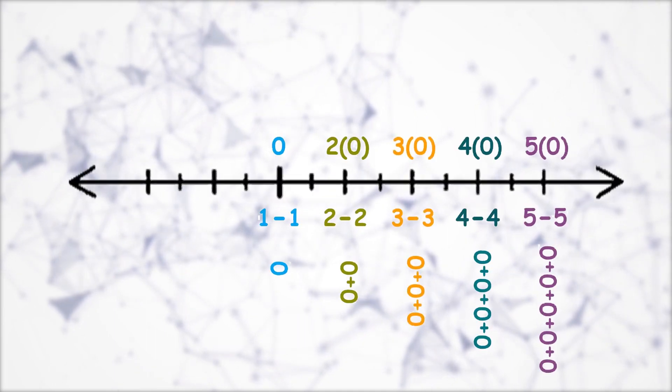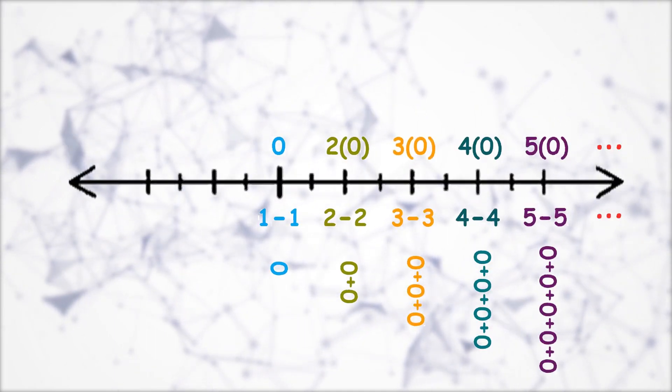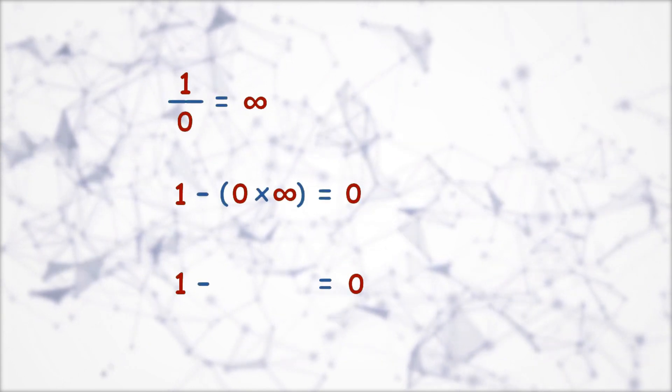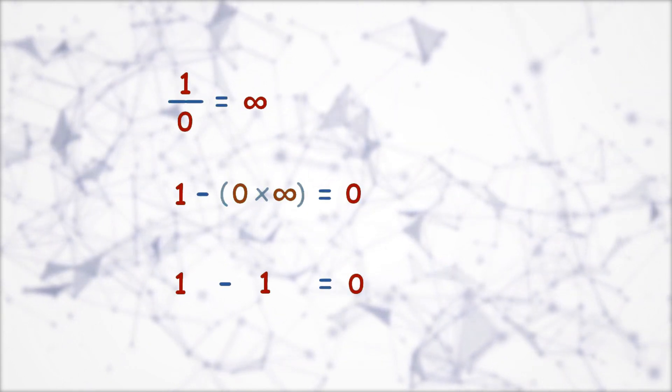So now looking into the basic of universal number line, we know that 1 minus 1 is 0. So here 1 minus 1 is 0 therefore proving 0 times infinity is 1.